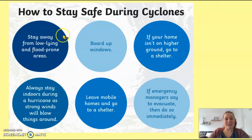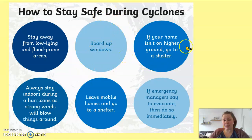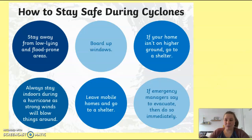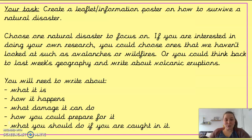When cyclones hit land, the rain and wind can cause massive damage to buildings, roads, and trees. They occur near the equator where it is hotter, usually in the hot summer months, as evaporation builds up clouds, wind forces air upwards, and humid air makes more clouds, growing the storm. To stay safe in a cyclone: stay away from low-lying and flood-prone areas, board up your windows, go to a shelter if your home is on low ground, stay indoors, leave mobile homes, and evacuate immediately if told to do so.